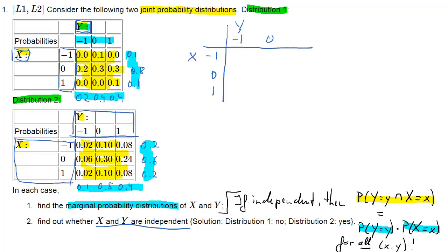So what we now need to do is draw another table with the same structure and same outcomes of Y and X. In this table we calculate the product of the respective marginal probabilities to see whether that result is the same as the joint probabilities given in the tables. So the first one: the marginal probability of Y being equal to -1 is 0.2...